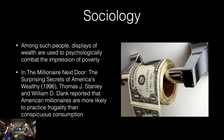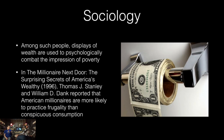Among such people, displays of wealth are used to psychologically combat the impression of poverty. 'The Millionaire Next Door' by Thomas J. Stanley and William D. Dank reported that American millionaires are more likely to practice frugality than conspicuous consumption — they didn't get rich spending. Look at Warren Buffett — the best example of this — or Steve Jobs with his turtlenecks and jeans, not an expensive suit. Warren Buffett is still living in the house he bought in Omaha in the 60s for five figures, when he can afford literally anything on the planet. A lot of that is cultural.